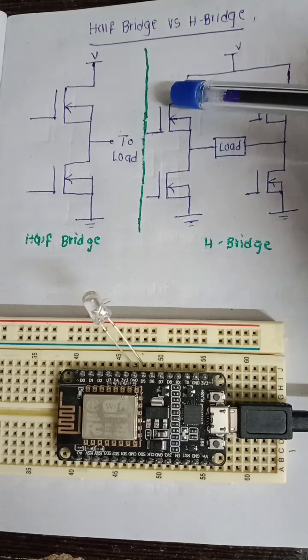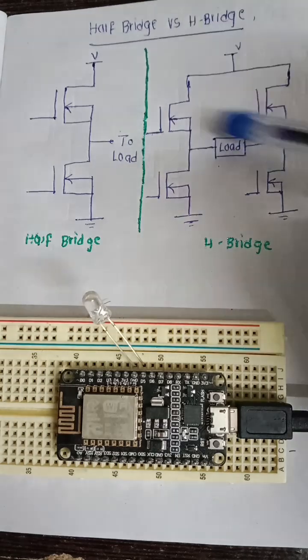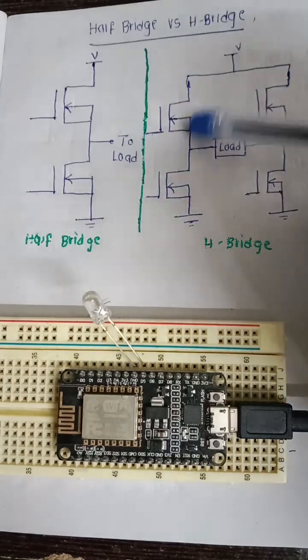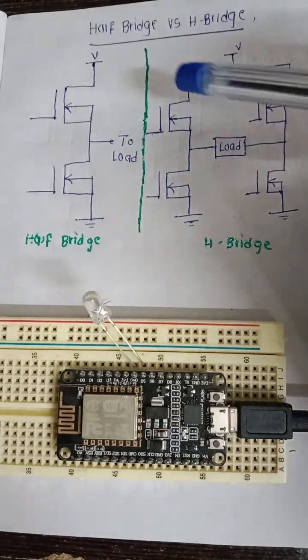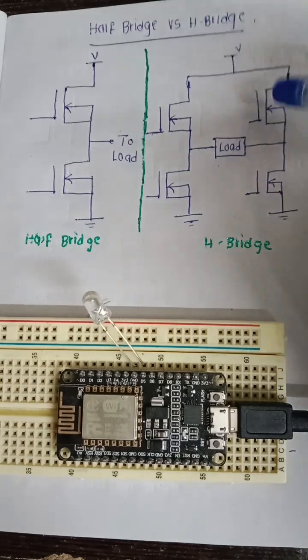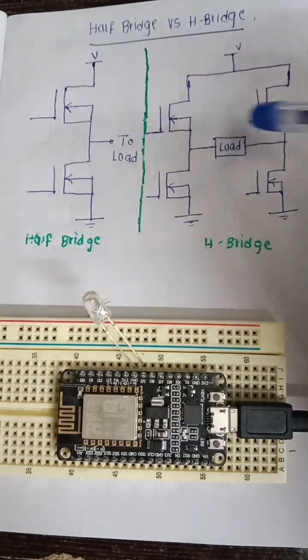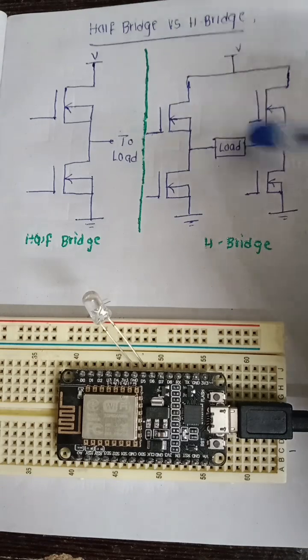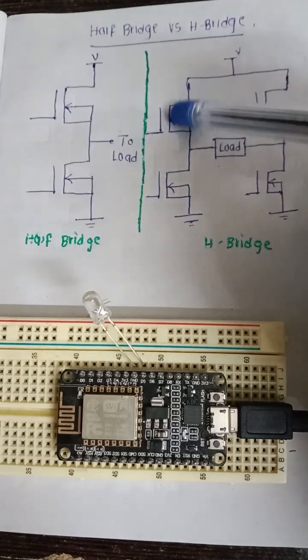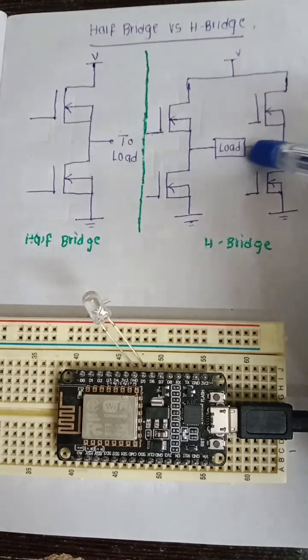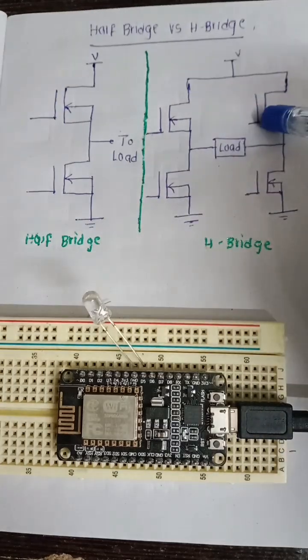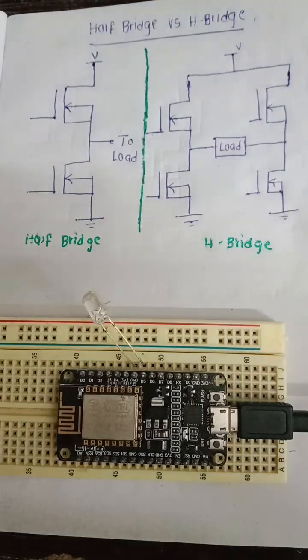This is called a H bridge configuration where the MOSFETs are connected in H configuration. The load is connected between the arms. Considering this scenario, the current can flow like this or current can flow like this when these two arms are on, so that means the motor can run in both directions.